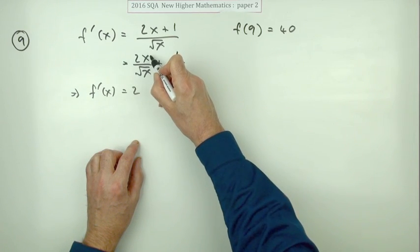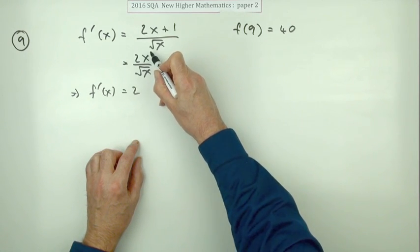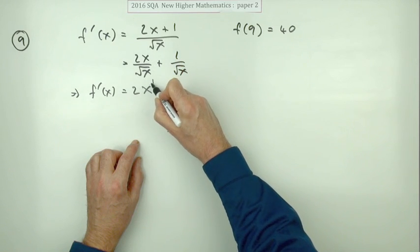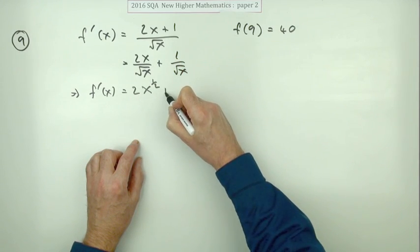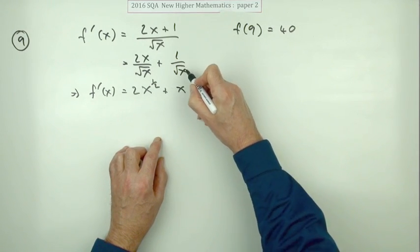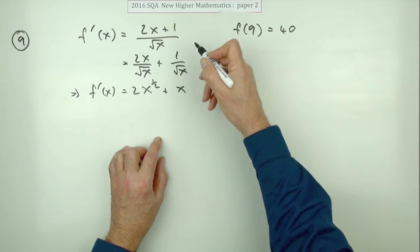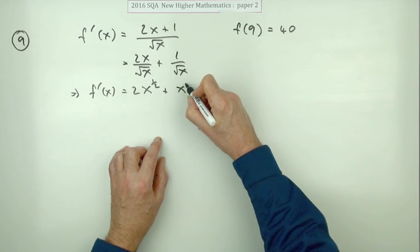That's power one, that's power a half. One take away a half is x to the power a half, plus that's just one times a half power underneath so that's power negative a half. That's the first mark.